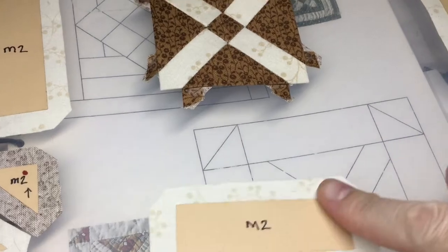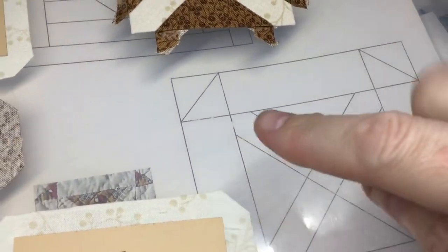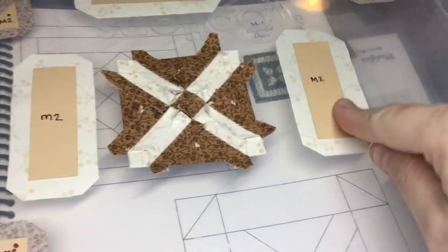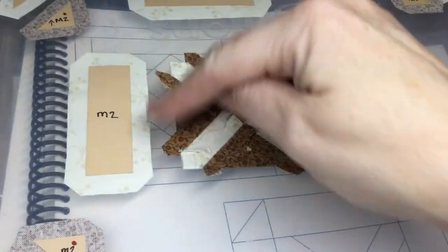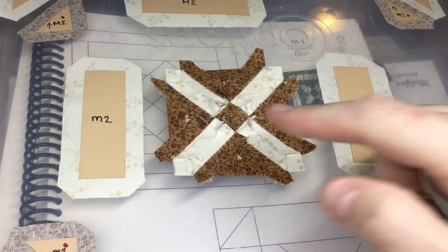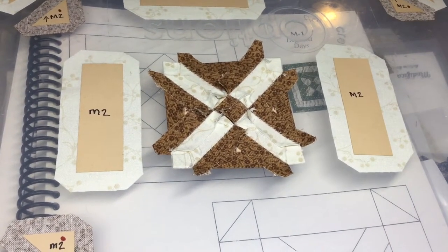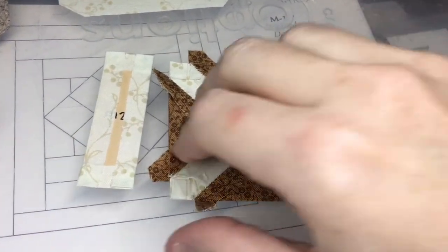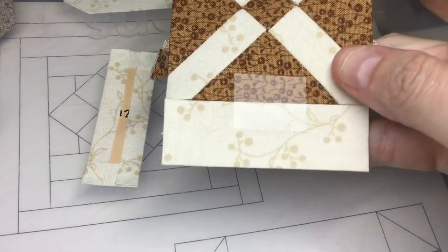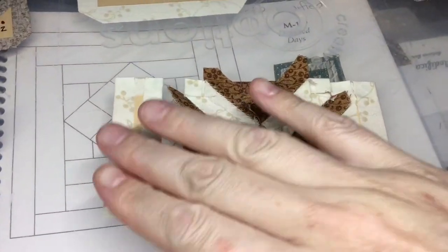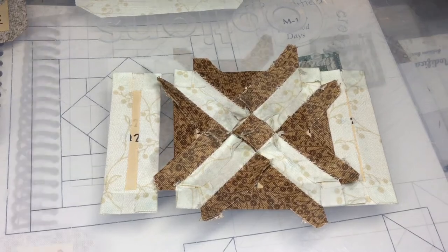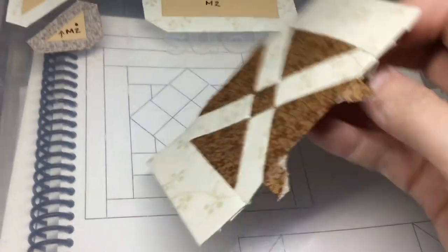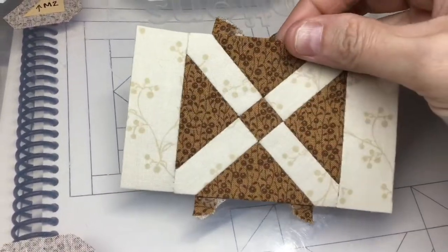So the next part this is so this is my center. The next part is to add the rectangles. So I'm going to baste these. I'm going to baste the short sides first and then the long sides and then I'll be able to attach them to my center. My rectangles are now basted and I have this one taped for attachment on the side and I will get this row completed. I've got my rectangles attached to my center square and my center section is completed.